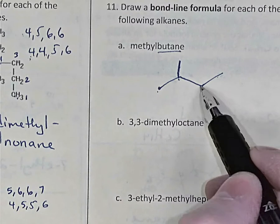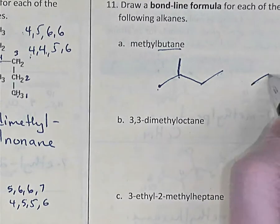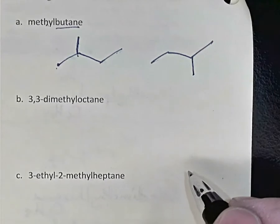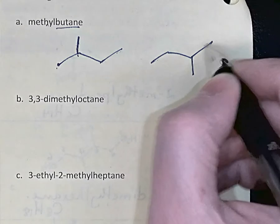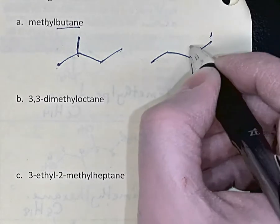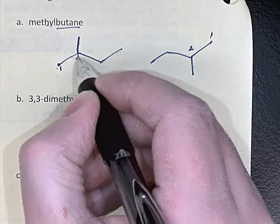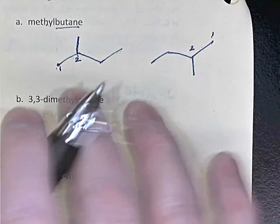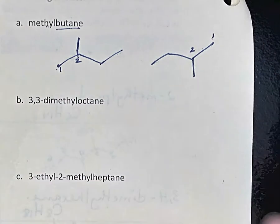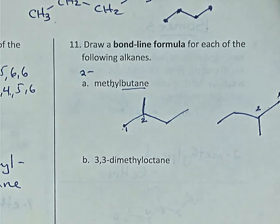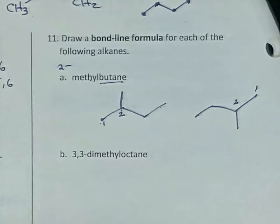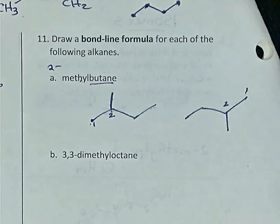What if you put it on the third carbon? If you put that branch on the third carbon, you'll notice that when you name it, you would have to start numbering your parent chain from the right-hand side — so this is actually carbon-1, carbon-2. It's the same molecule, so I don't need to call it 2-methylbutane, I can just call it methylbutane. If you did call it 2-methylbutane on a test, that would be perfectly fine, but because there's no uncertainty where the branch has to be, you don't need to put a number.